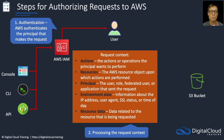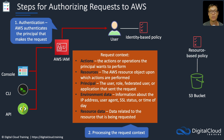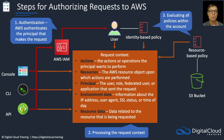The request context must then be formulated and processed. This includes several attributes: the actions or operations the principal wants to perform; the resources — in this case we're trying to perform those actions against an S3 bucket; the principal — in this case a user, but could be a role, federated user, or application; some environment data such as the IP address or SSL status of the connection; and resource data related to the S3 bucket being requested. Identity-based policies and any resource-based policies must also be evaluated, and then the action — in this case the GetObject action — will be allowed or denied. In this case, it's allowed.